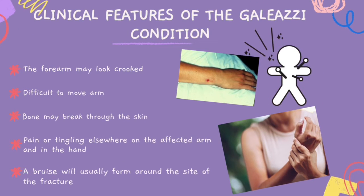Clinical features of the Galeazzi condition: the forearm may look broken and the arm is difficult to move. In serious cases, the bone may break through the skin. The patient may feel pain or tingling elsewhere on the affected arm and in the hand. A bruise will usually form around the site of the fracture.